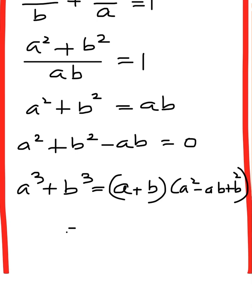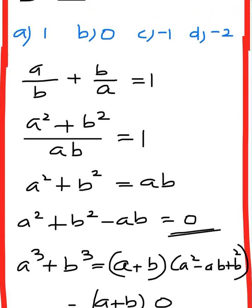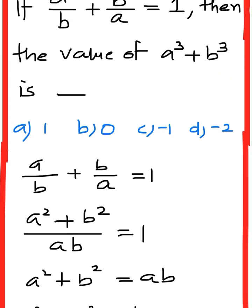Now, (a + b) times (a² - ab + b²) equals 0. So (a + b) times 0 equals 0. Then the answer is option B.